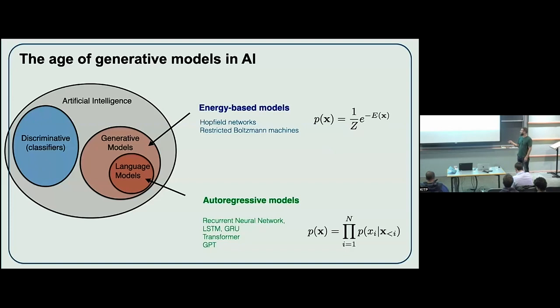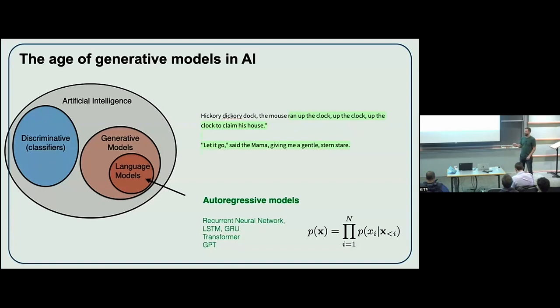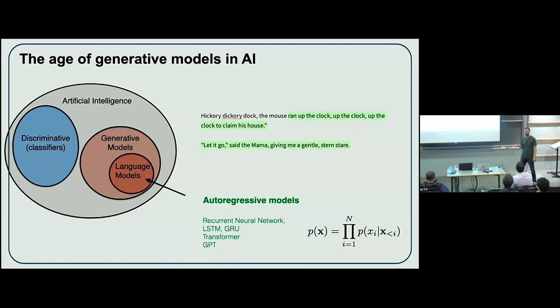Energy-based models and non-autoregressive models are still very much players. Diffusion models — if you use something like Midjourney — are still a very active area of research. The autoregressive breakup is particularly useful when you have a sequence, and natural language is very much a sequence: one word comes after another. Here's a generative model — 'Hickory dickory dock, the mouse ran...' — and I prompted a transformer. Everything past that is generated, basically unrolling an autoregressive model to generate the rest of the words in a sequence.